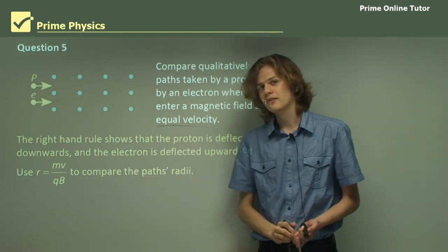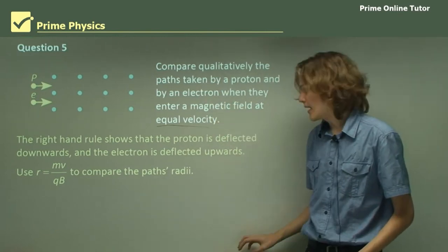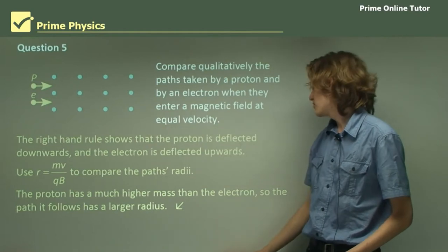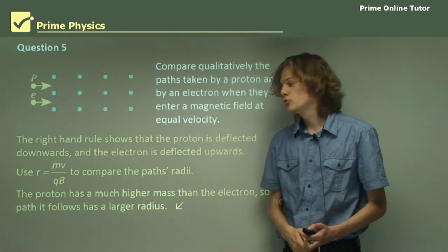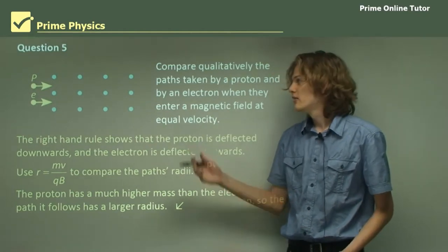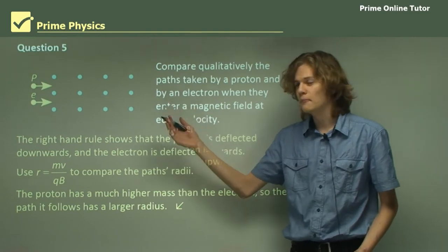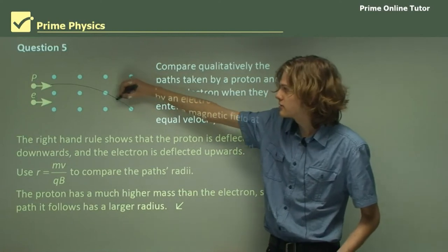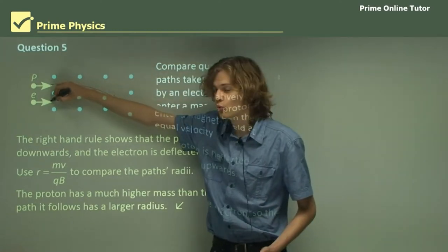We know that the proton has a much larger mass than the electron, so the path that follows will have a much larger radius. The paths that they follow, if I drew them on the diagram, would look something like this. The proton with a very large radius, and the electron with a very small radius.